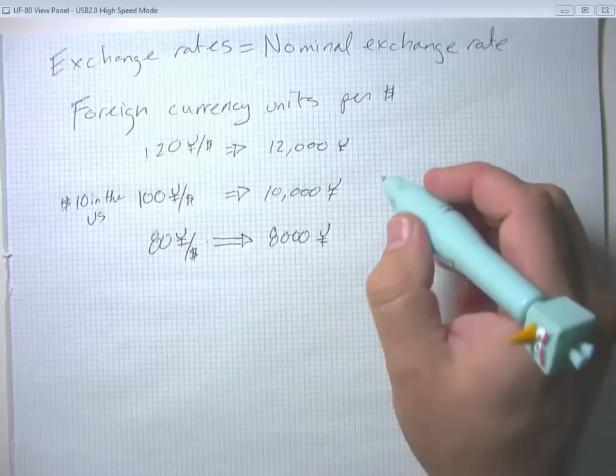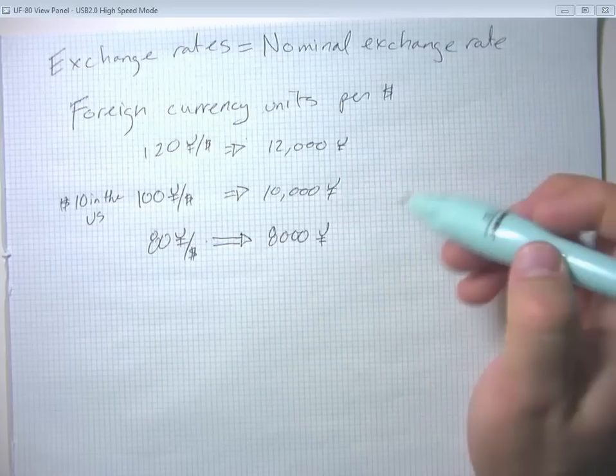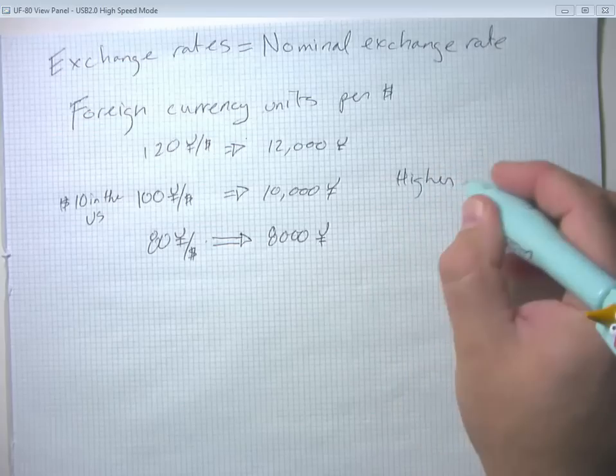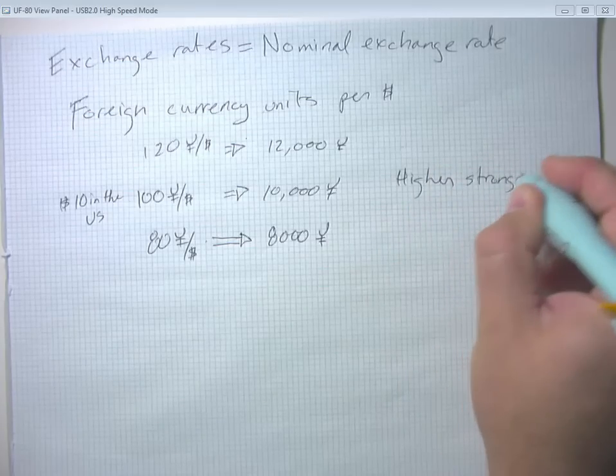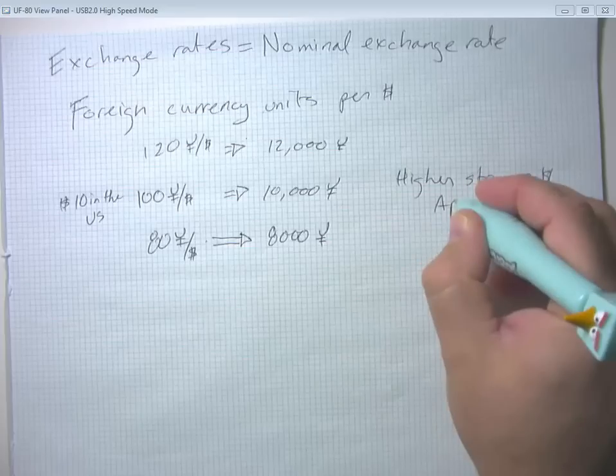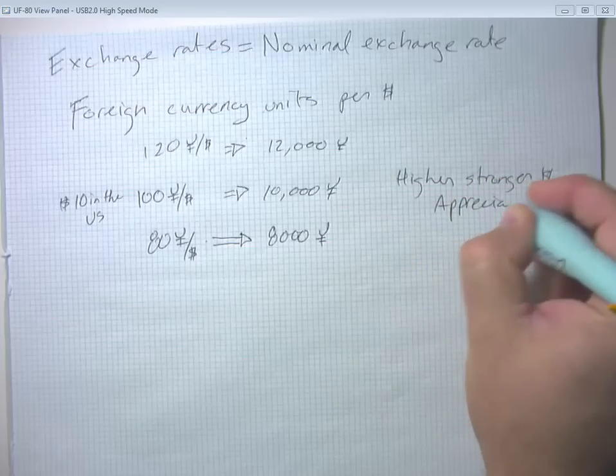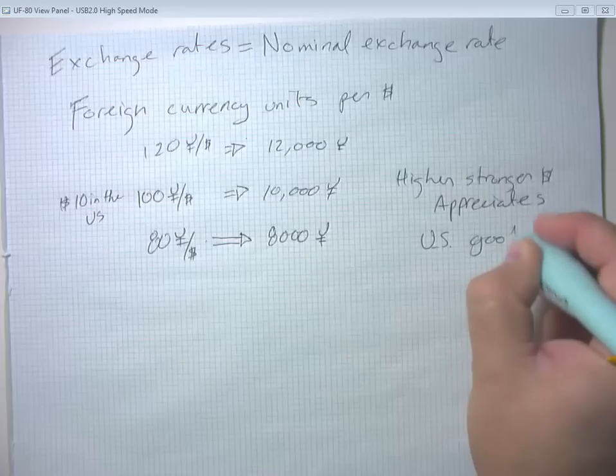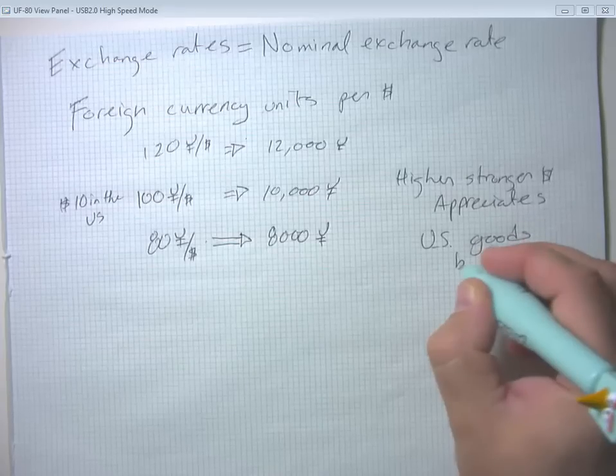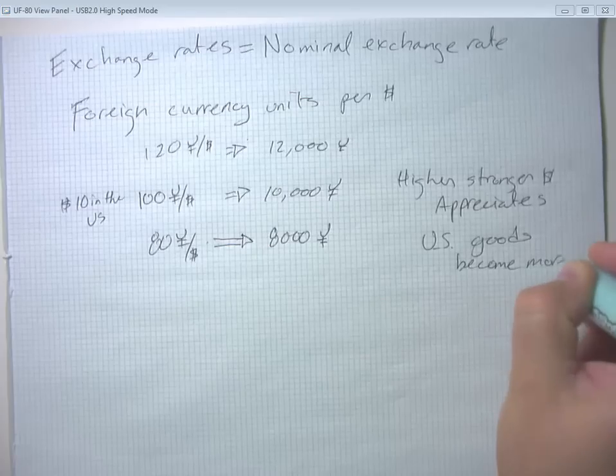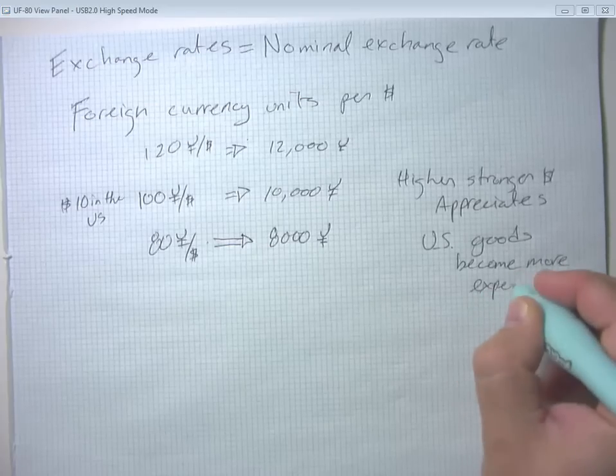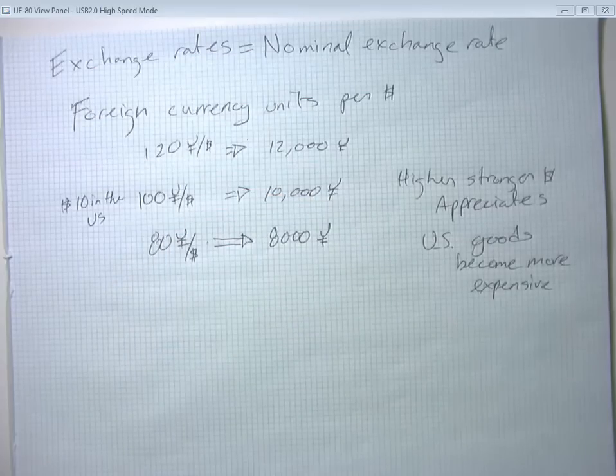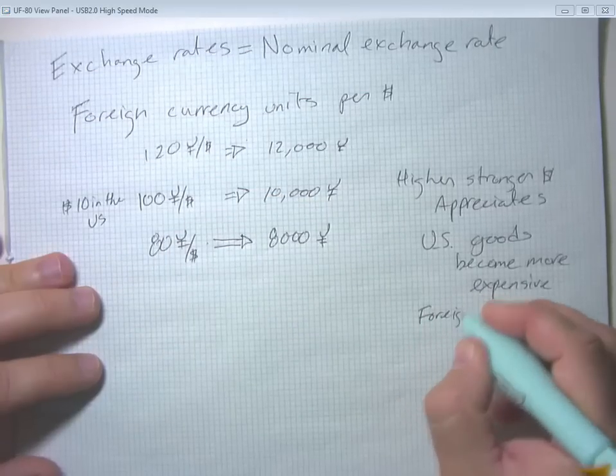So two things to notice here. When this exchange rate rises, the higher or stronger dollar we talk about or when the dollar appreciates, then US goods become more expensive. And if we did an example where we were looking at Japanese goods and translating them into dollars, we would also see that foreign goods become cheaper.